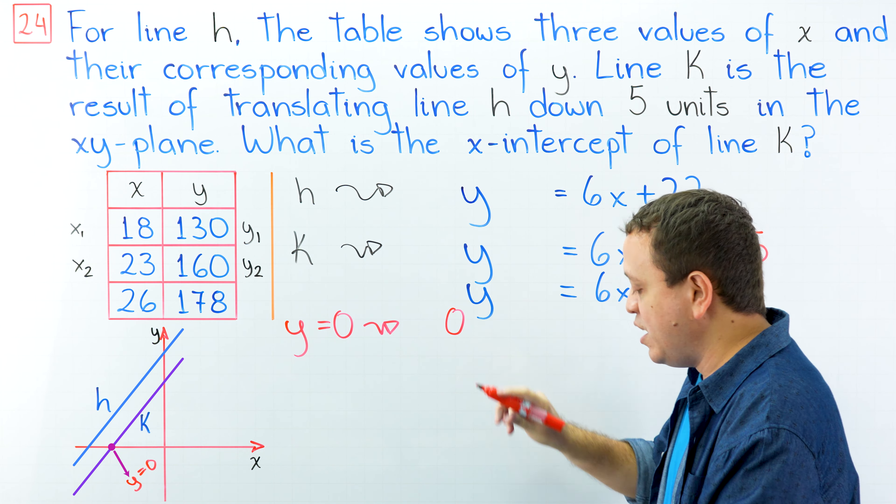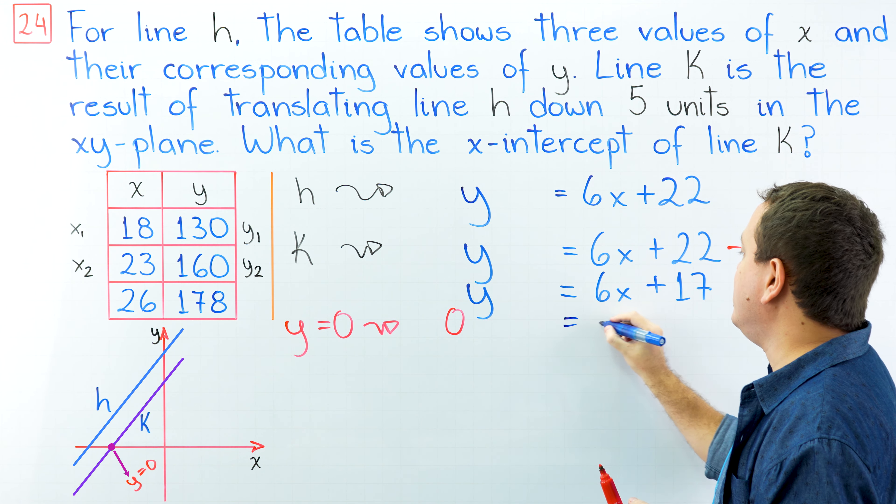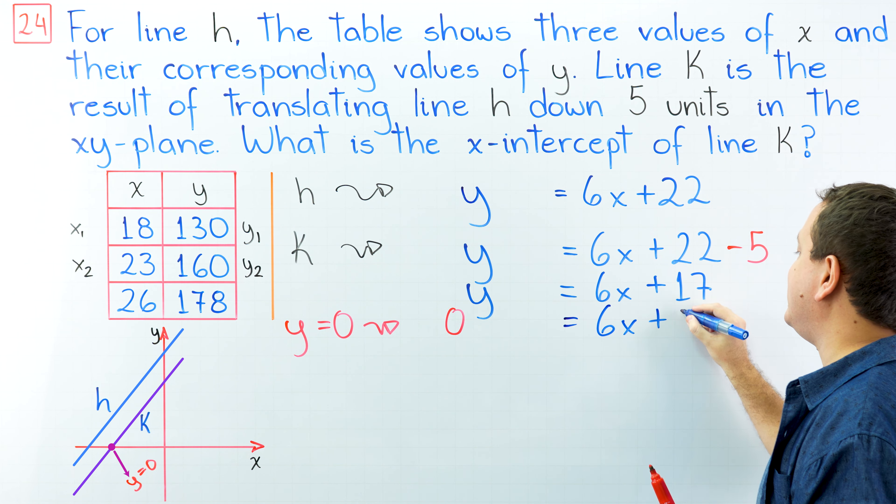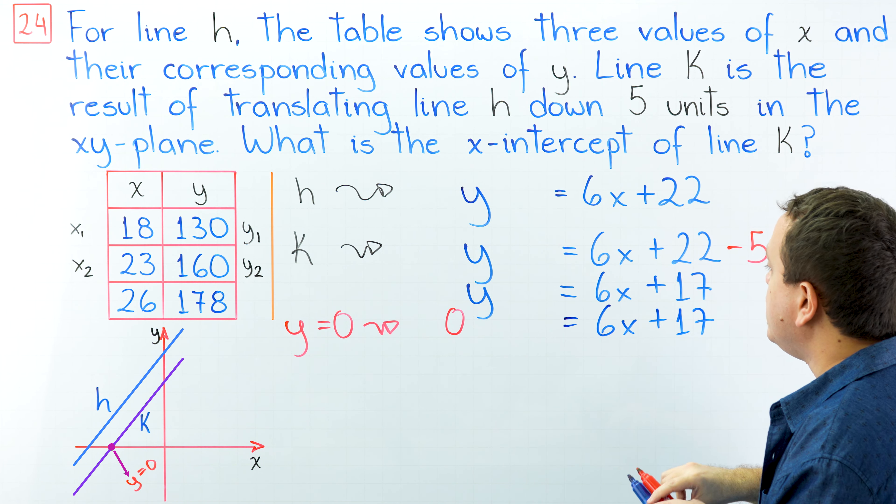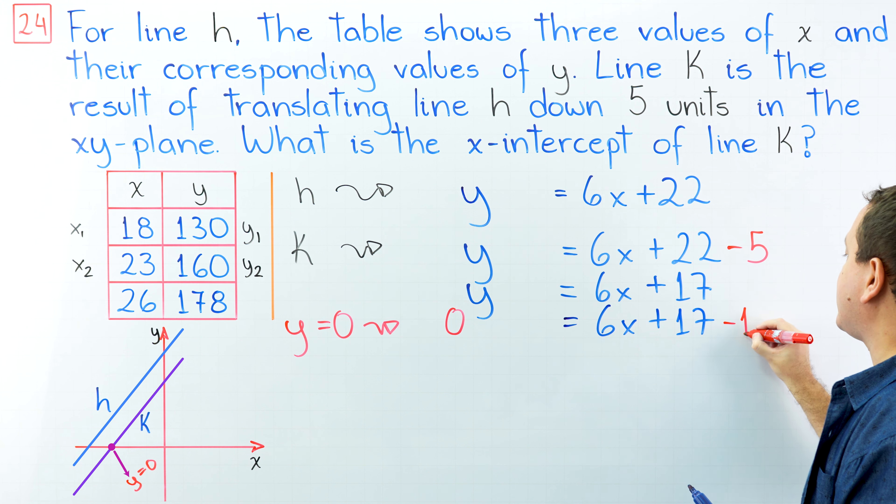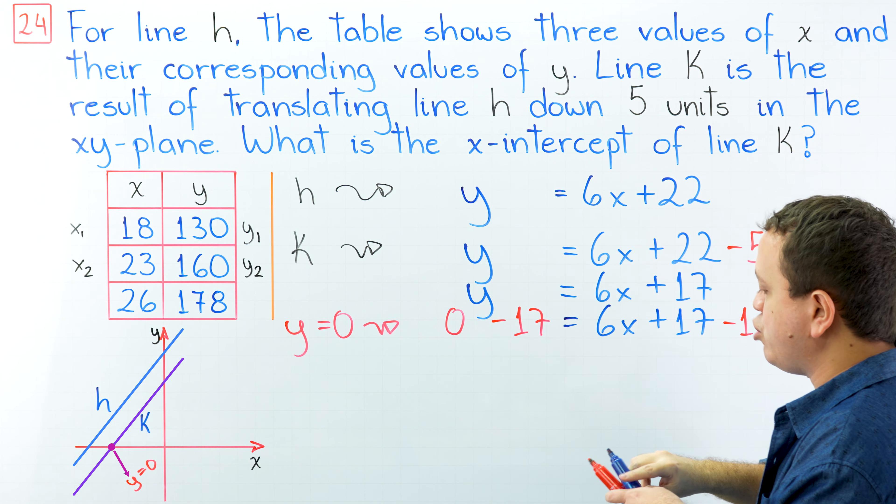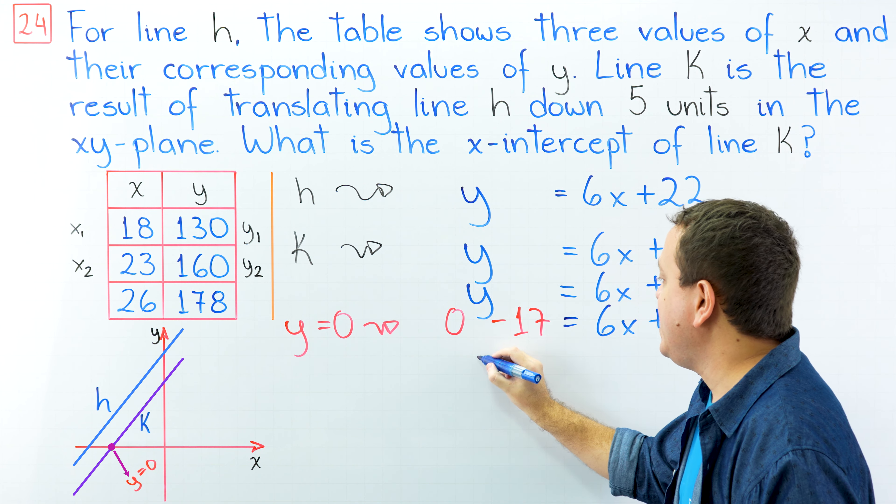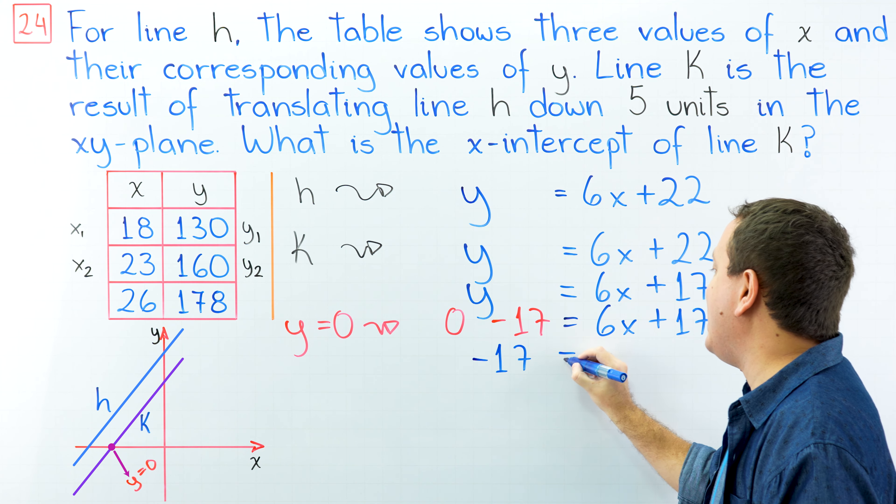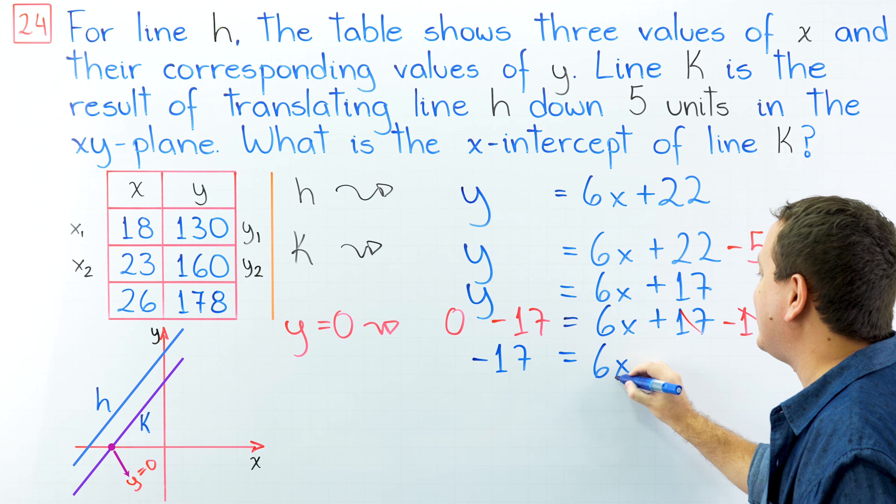Instead of y, we're going to write 0, and this is equal to 6x plus 17. In the following step, we're going to subtract 17 from both sides of our equation. 0 minus 17 gives us negative 17, and this is equal to 6x.